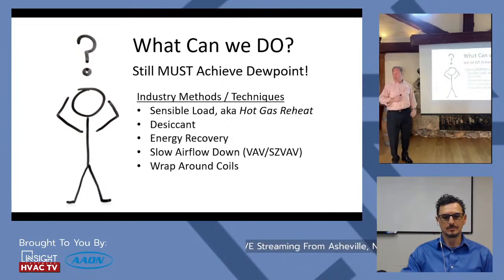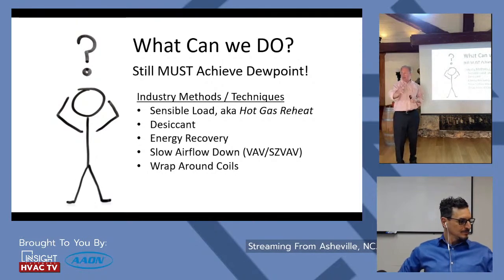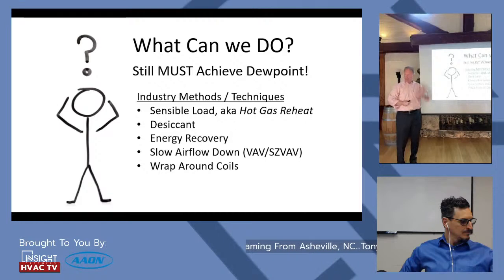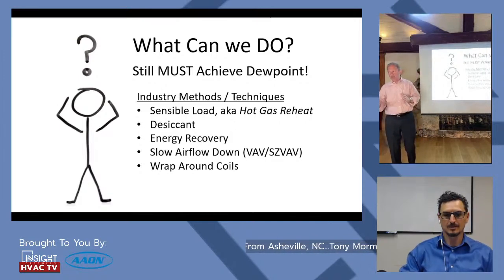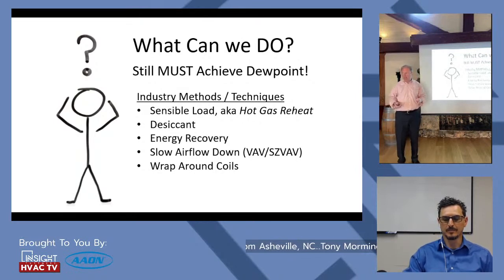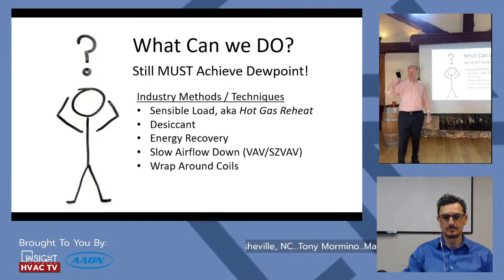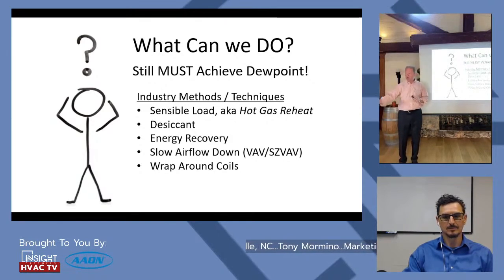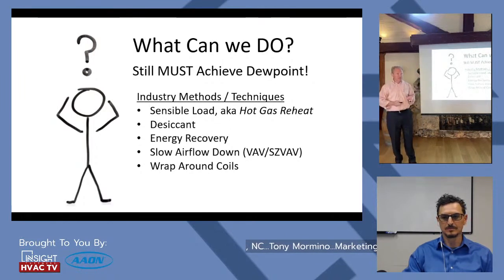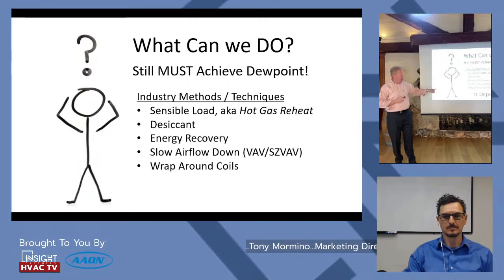Wraparound coils are another technique — you pre-treat some of the outside air, drop out some moisture, run it through the standard DX system to get down to 55°F, then warm it back up. Your supply temperature is higher, so you have less sensible capacity — which is sometimes exactly what the application needs. There are probably 10 solutions to every HVAC application, and you choose based on cost, energy profile, and local power rates. Design differs between the high-power-cost Northeast, islands with expensive power, or areas like here with good power rates.